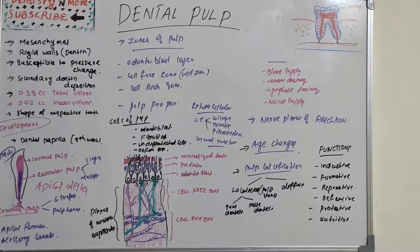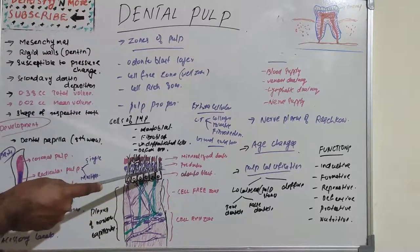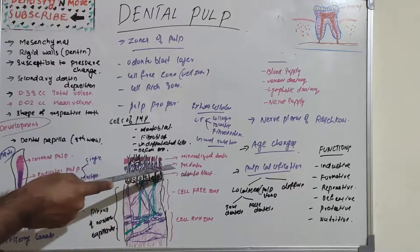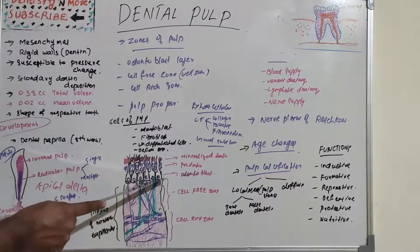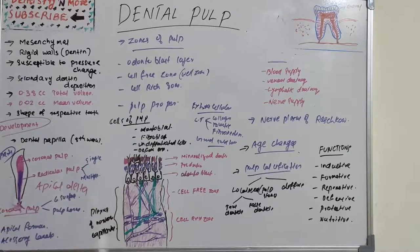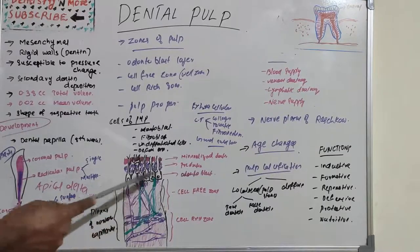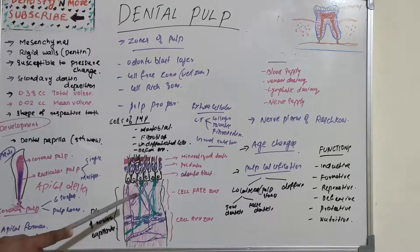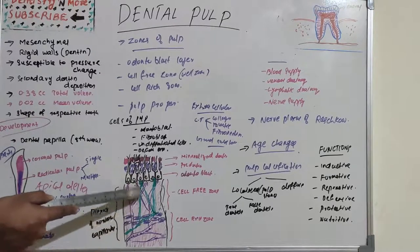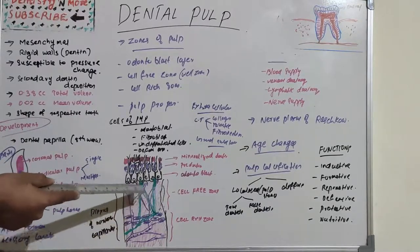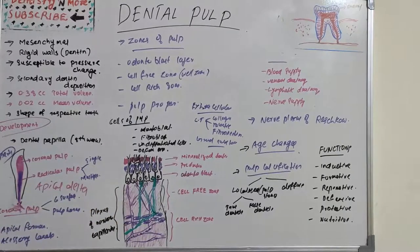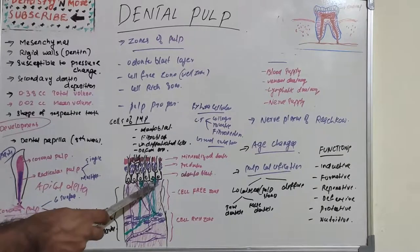The odontoblast layer is adjacent to the predentine — the first-formed dentine. The cell body is located in the pulp and the cell process extends into the dentinal tubules. The cell-free zone, also known as the Weil zone, is 40 microns wide and relatively free of cells. It is traversed by blood vessels, nerves, and cytoplasmic processes, but contains no cells. This zone lies below the odontoblastic layer.